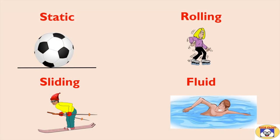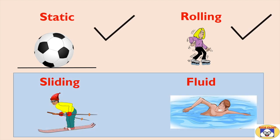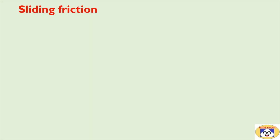Friction opposes the motion of an object or surfaces in contact. There are four types of friction: static, rolling, sliding, and fluid friction. We have learned about static and rolling friction in our previous video. Here we will discuss sliding and fluid friction. Let's start with sliding friction.